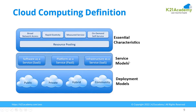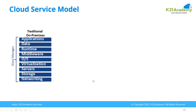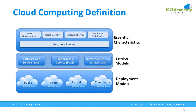There are three service models: Software as a Service, Platform as a Service, and Infrastructure as a Service. And there are four deployment models: public, private, hybrid, and community. We'll cover these service models and deployment models in detail in our next lesson.